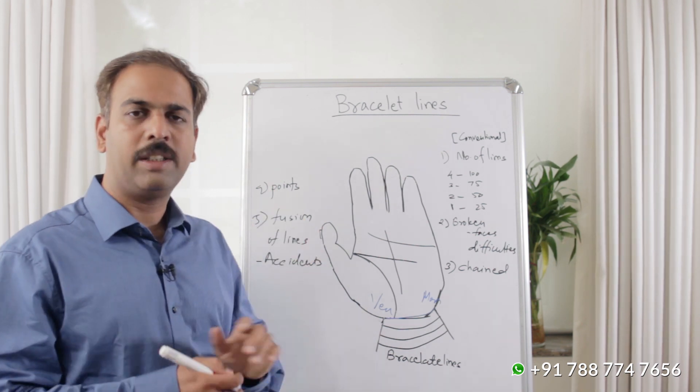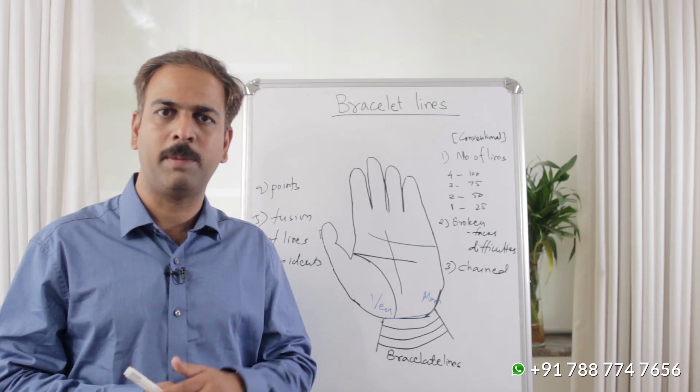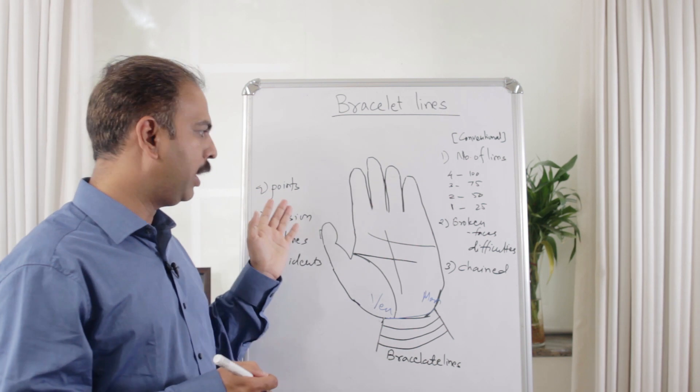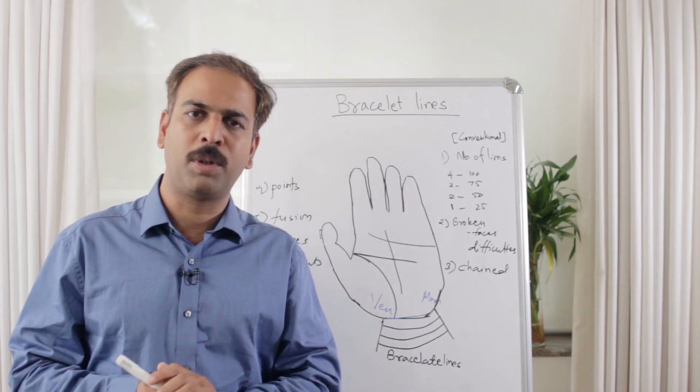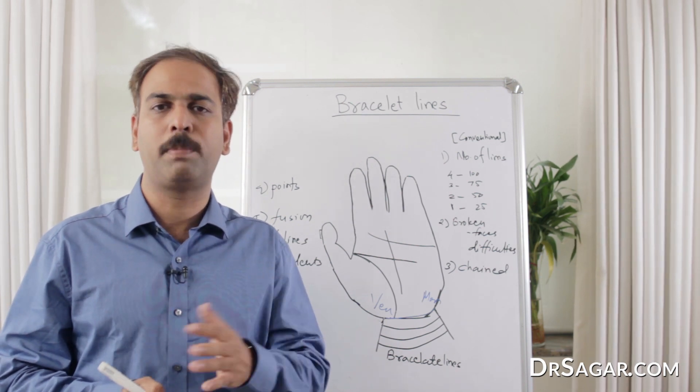The third meaning is if you have points or moles on the bracelet line, then it indicates health problems, stomach problems, digestion problems. And in females, particularly, if there is a point and the line is also broken, there may be some problems in the pregnancy or at the time of pregnancy.